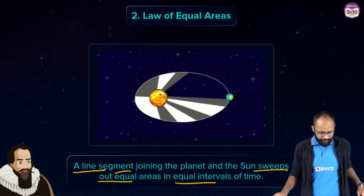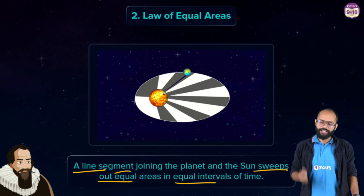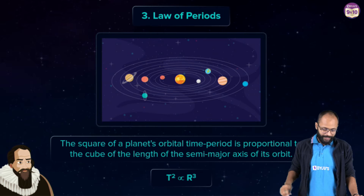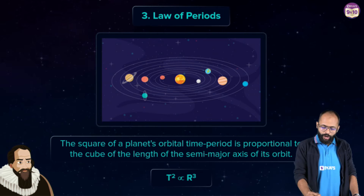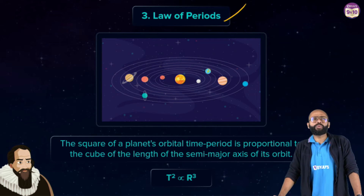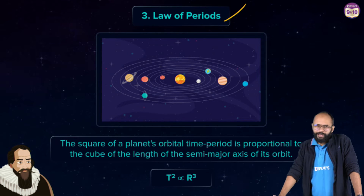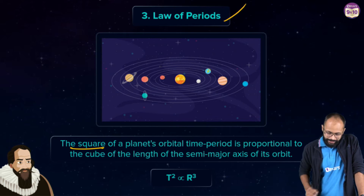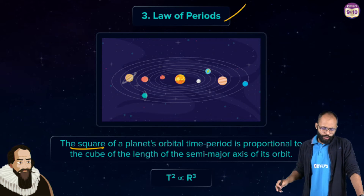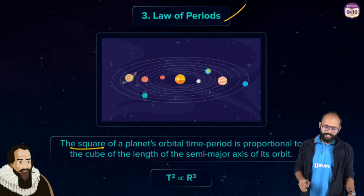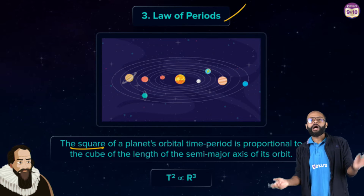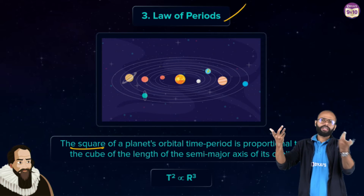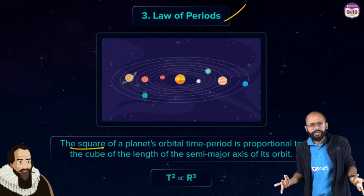This is the Second Law of Equal Areas — a fairly simple but very important law. The Third Law — the Law of Periods — says that the square of a planet's orbital time period (how long it takes to complete one elliptical path) is proportional to the cube of the length of the semi-major axis of its orbit.